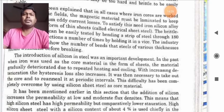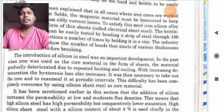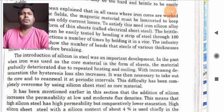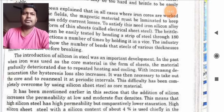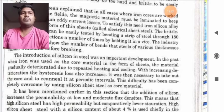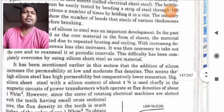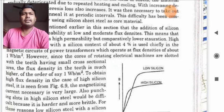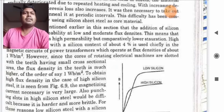It has been mentioned that in the section that the addition of silicon increases permeability. By adding silicon, the permeability of the material is increased at low and moderate flux densities. This means that high silicon steel has high permeability but comparatively lower saturation. High silicon steel with a silicon content of about 4% is usually chief in the magnetic circuits of power transformers which operate at a flux density of about 1 Weber per meter square.